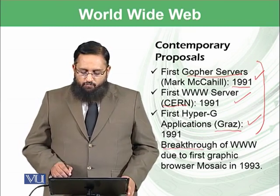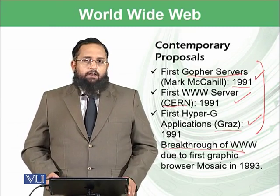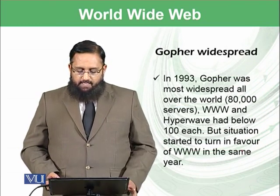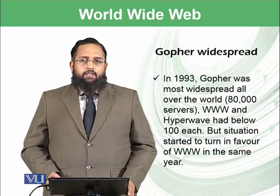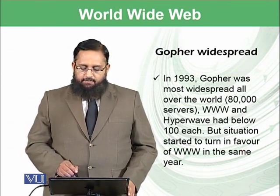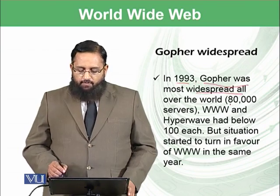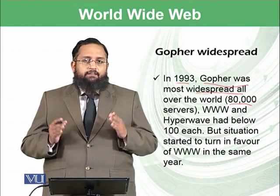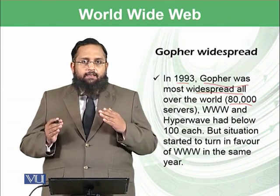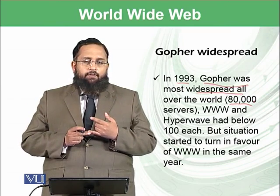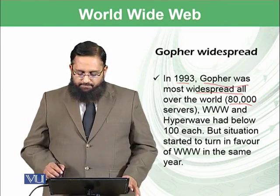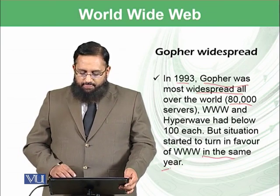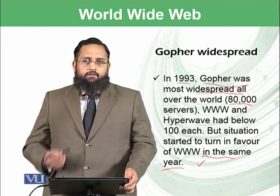The breakthrough was given to World Wide Web due to the first graphical browser known as Mosaic in 1993. However, before the Mosaic browser, Gopher was most widespread around the world — there were 80,000 Gopher servers available in 1993, while at that time fewer than 10 servers were available for World Wide Web and Hyper-G. But the situation started to turn in favor of World Wide Web in the same year, and by 1994 it gained a lot of momentum.